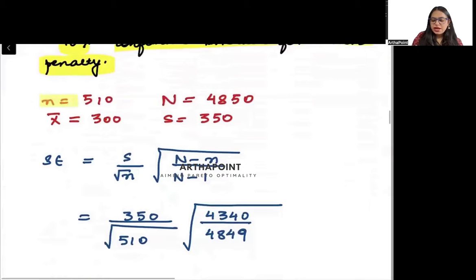Let us try to see this question. The sample size is given to you as 510 from the population of 4850. So you are finding that 510 people are without ticket out of 4850.